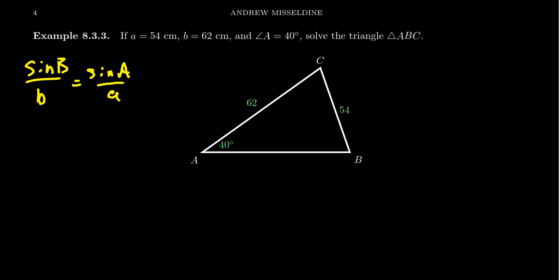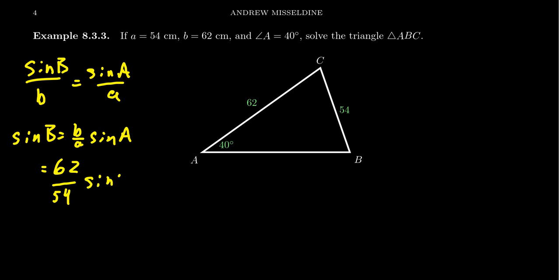We want to solve for angle B, so we multiply both sides by little b. That gives us sin(B) = (b/a) × sin(A). Little b is 62, little a is 54, and we take sin(40°). Make sure your calculator is in degree mode. If you plug in 62 divided by 54 times sine of 40 degrees, you'll end up with 0.74 as your ratio.